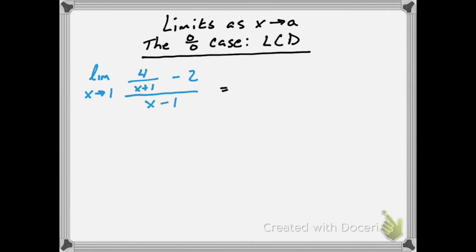When we plug in 1, you can check for yourself, we'll end up with 0 on the top and bottom. This means we have to simplify.